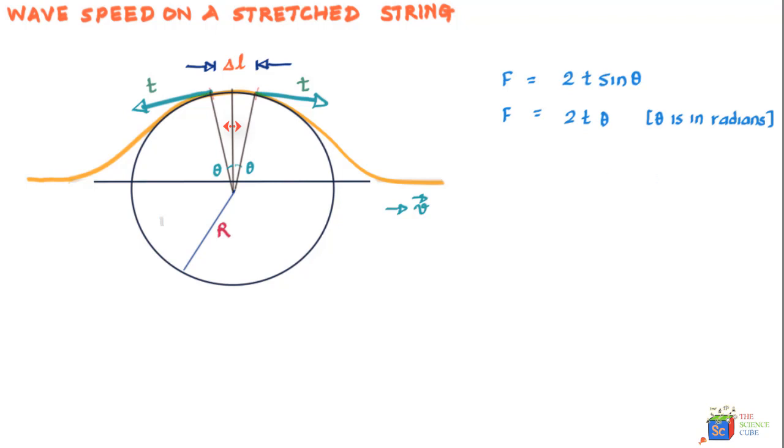We also know that the length of the arc of a circle is equal to the product of the radius of the circle and the angle subtended at the center measured in radians. So we can say that Δl = R × 2θ, because the angle subtended at the center is 2θ.